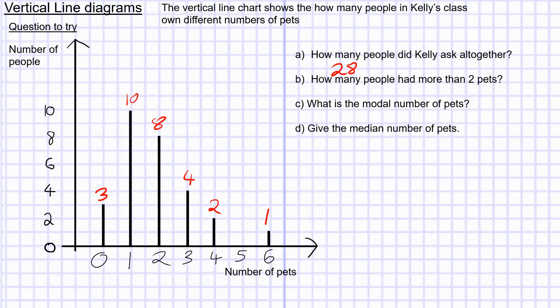How many people had more than two pets? We're interested in three, four, five, or six pets. There were four people with three, two with four, and one person with six. So that's 4 plus 2 plus 1, which is 7. Seven people had more than two pets.